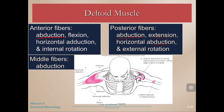Instead of internal rotation, the posterior deltoid does external rotation. So it has an opposite set of actions compared to the anterior fibers, except for abduction — because all three heads contract together to produce abduction.